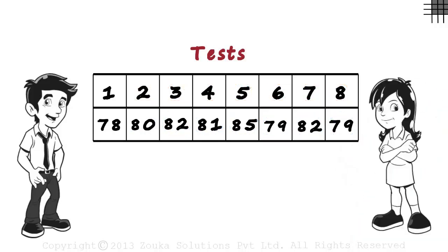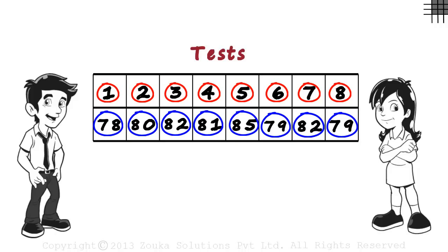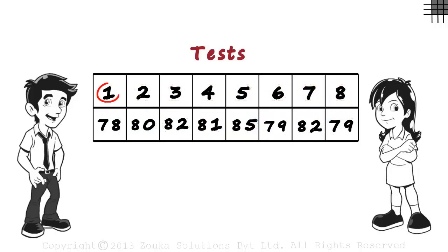So one day, Zara asks him about his performance in algebra. Now Zen has two options. He can either tell Zara about his score in each test, something like: in the first test, I scored a 78. In the second test, I scored an 80. In the third, I scored 82.